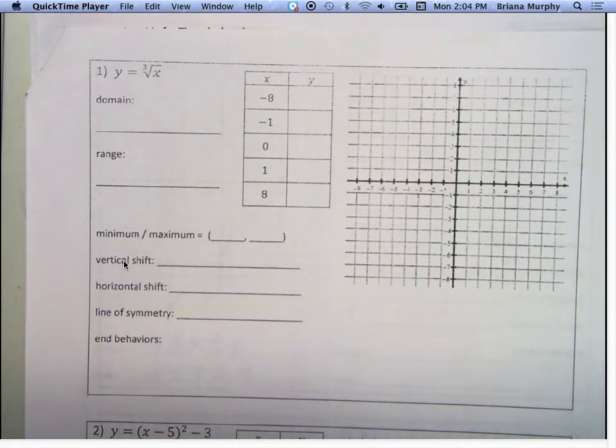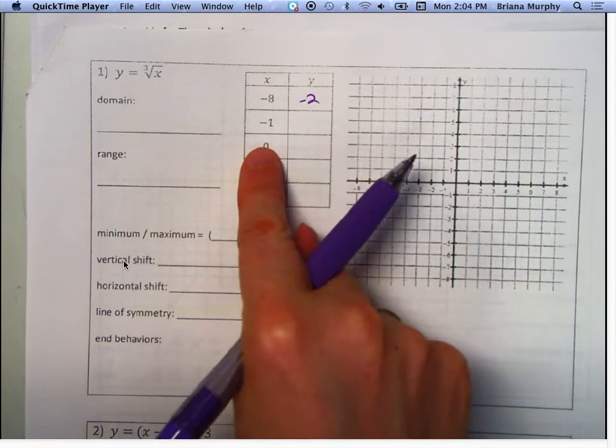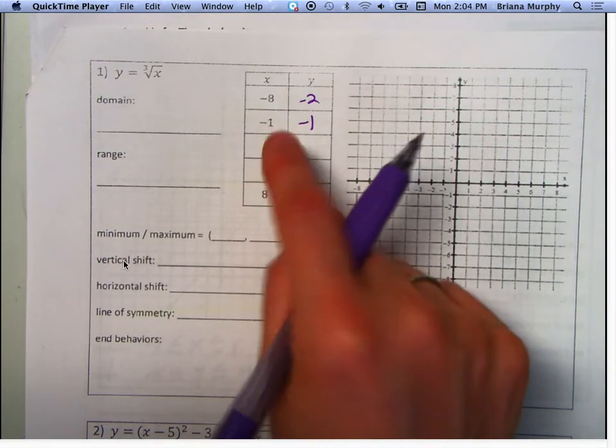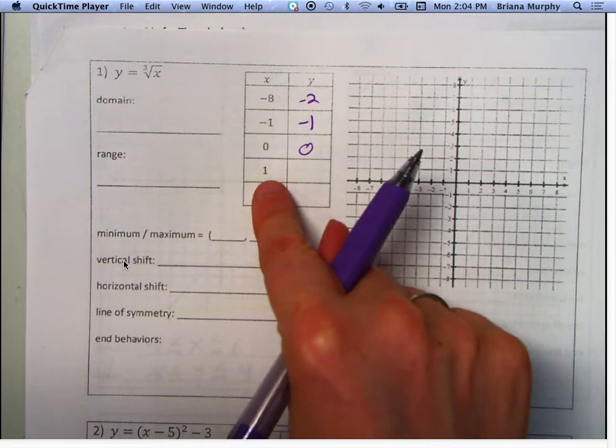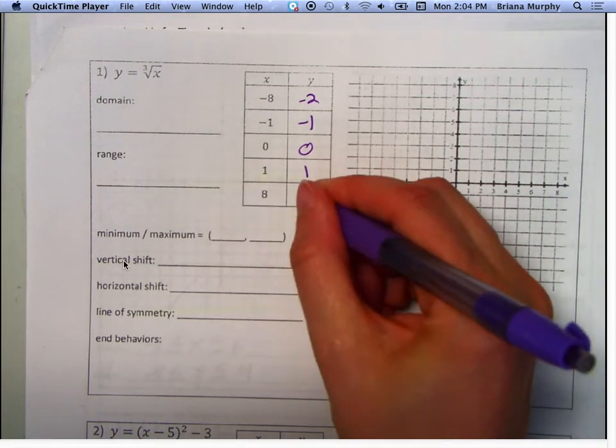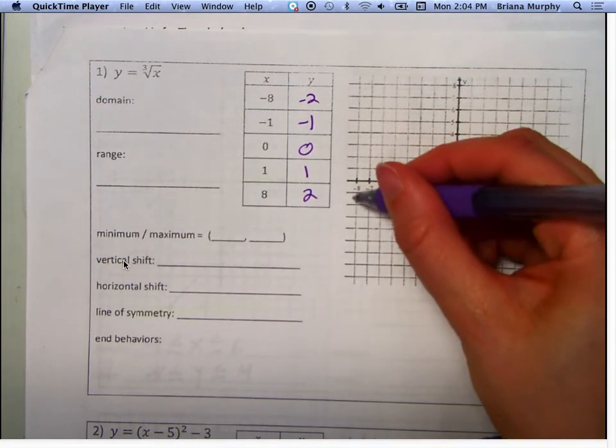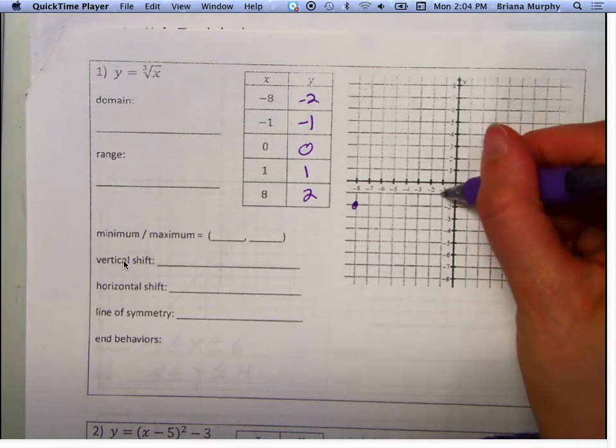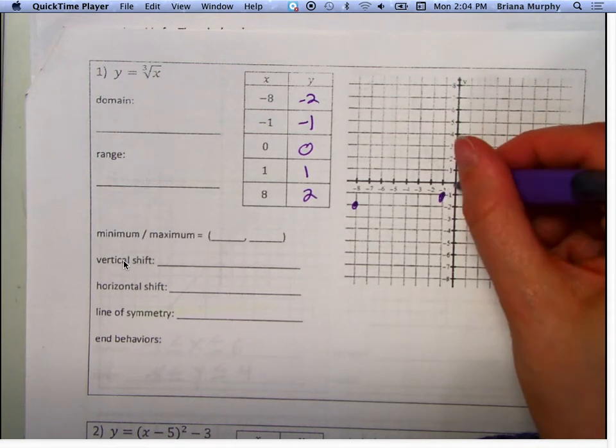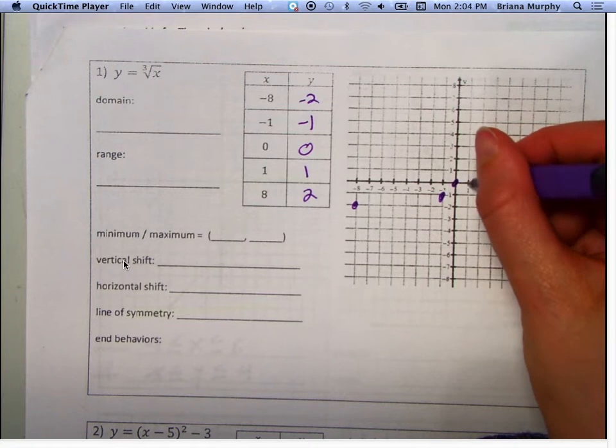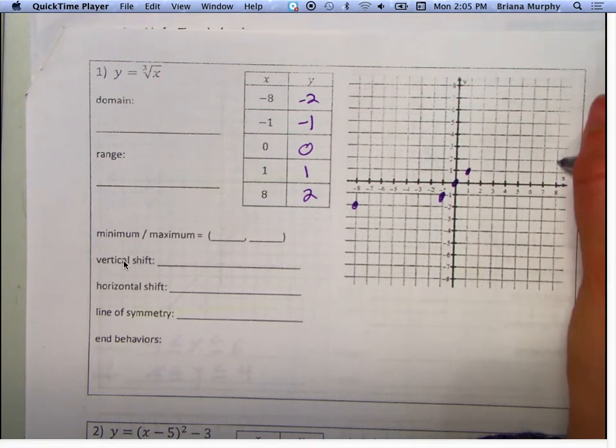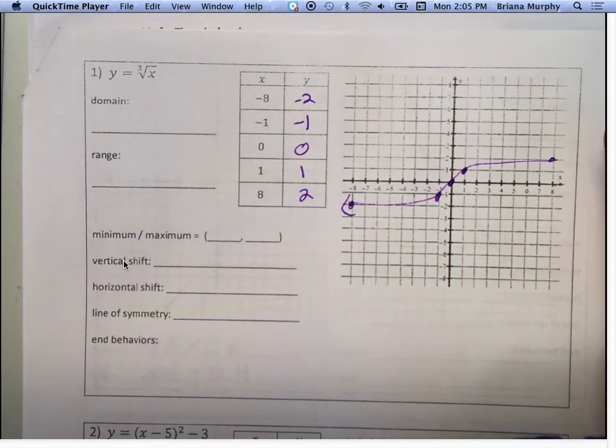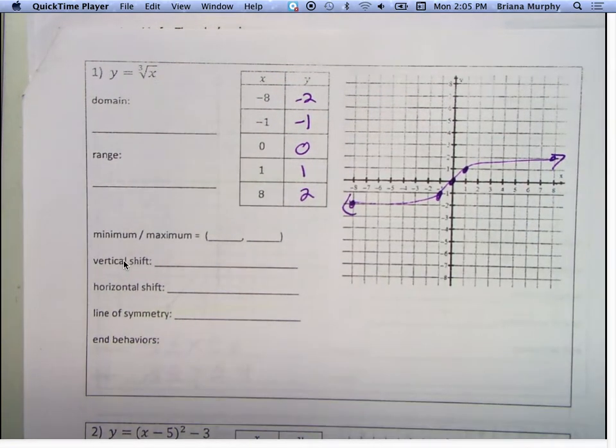Okay. Cube root of negative 8 is negative 2. Cube root of negative 1 is negative 1. Cube root of 0 is 0. Cube root of 1 is 1. And cube root of 8 is 2. So at negative 8, I'm at negative 2. At negative 1, I'm at negative 1. At 0, I'm at 0. At 1, I'm at 1. And at 8, I'm at 2. So we have that little funky cube root.